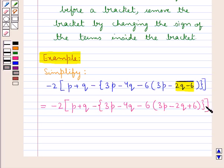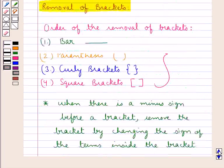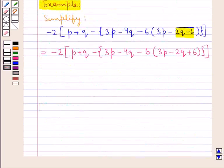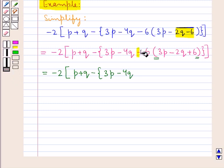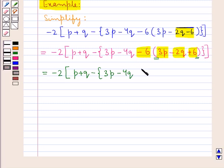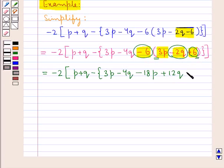In this expression so obtained, we don't have any more bars. So next we have to remove the parentheses. These are the parentheses — let us now remove them. This would be equal to minus 2, square bracket open, p plus q minus, curly bracket open, 3p minus 4q. Now when we remove these parentheses, we have minus 6 before them, so we multiply each term inside by minus 6. Minus 6 multiplied by 3p gives minus 18p. Minus 6 multiplied by minus 2q gives plus 12q. Minus 6 multiplied by plus 6 gives minus 36. This removes our parentheses.